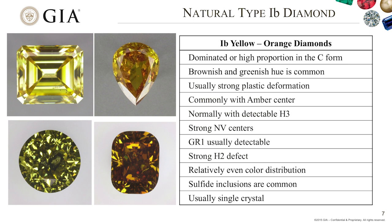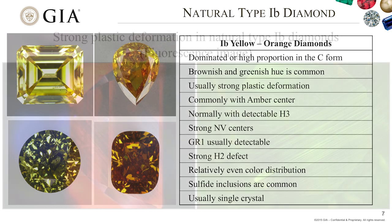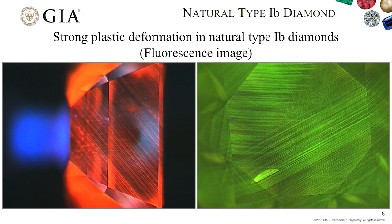Their color is almost evenly distributed. One very important feature is that sulfide inclusions are very common in this diamond. They are usually single crystal, rather than a stone with multiple nucleation centers. This fluorescence image taken from the DiamondView distributed by De Beers uses very strong short-wave UV light to excite the diamond. We see dislocation and plastic deformation lines — some showing red-orange color from NV centers, and green lines from very strong H3 defects. Plastic deformation is an important feature for natural 1b diamond.